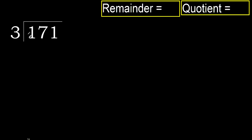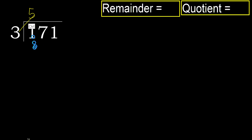171 divided by 3. 1 is less, therefore next. 17 is not less, therefore work with 17. 3 multiplied by which number is nearest to 17 but not greater? 3 multiplied by 6 is 18 — 18 is greater. 3 multiplied by 5 is 15 — 15 is not greater. Okay, subtract. Remainder is 2, bring down next digit.